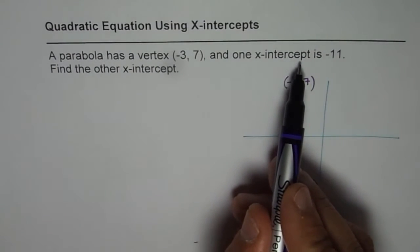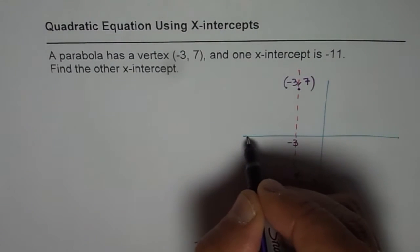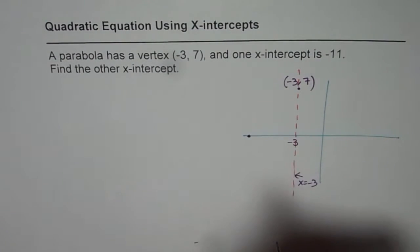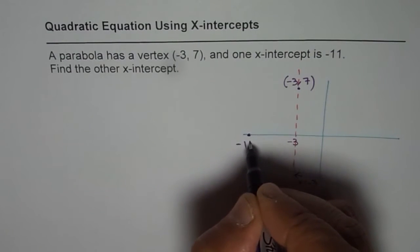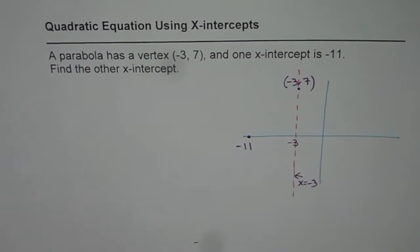And one x-intercept is -11. So if this is -3, let us say -11 is somewhere here. So this is -11. We need to find the other x-intercept. That is the question.